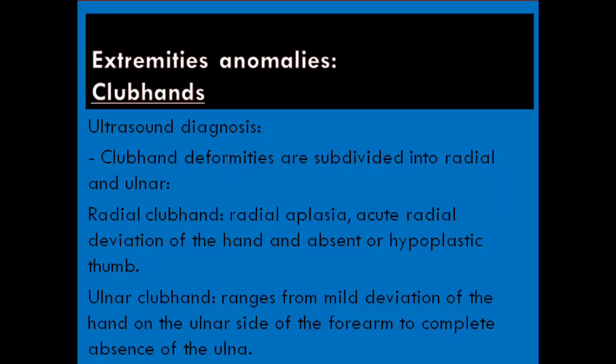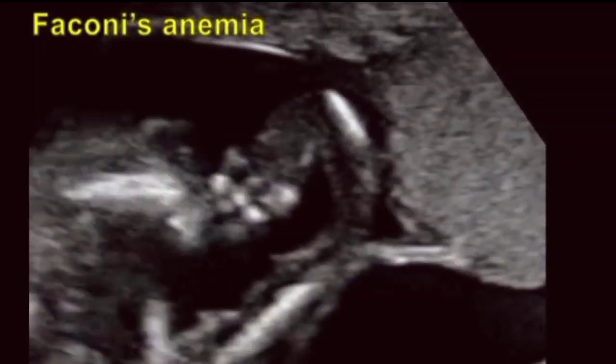The next is club hands. Ultrasound diagnosis: club hand deformities are subdivided into radial and ulnar. Radial club hand involves radial aplasia, acute radial deviation of the hand, and absent or hypoplastic thumb. Ulnar club hand ranges from mild deviation of the hand on the ulnar side of the forearm to complete absence of the ulna.